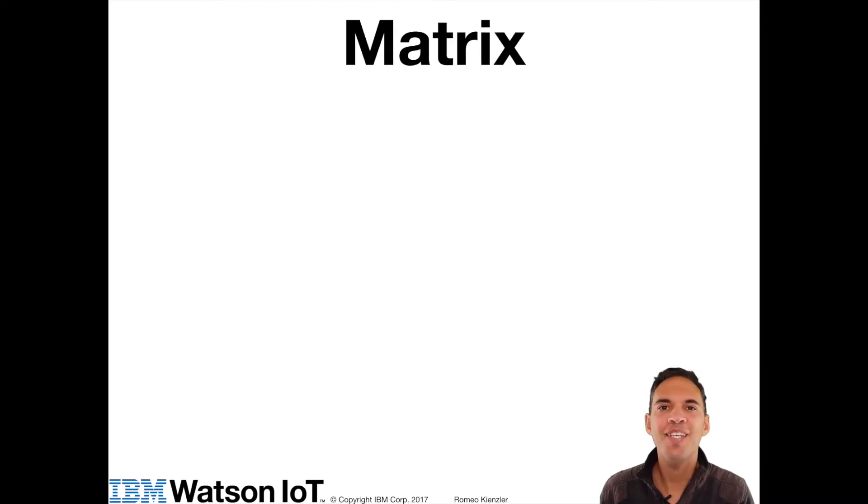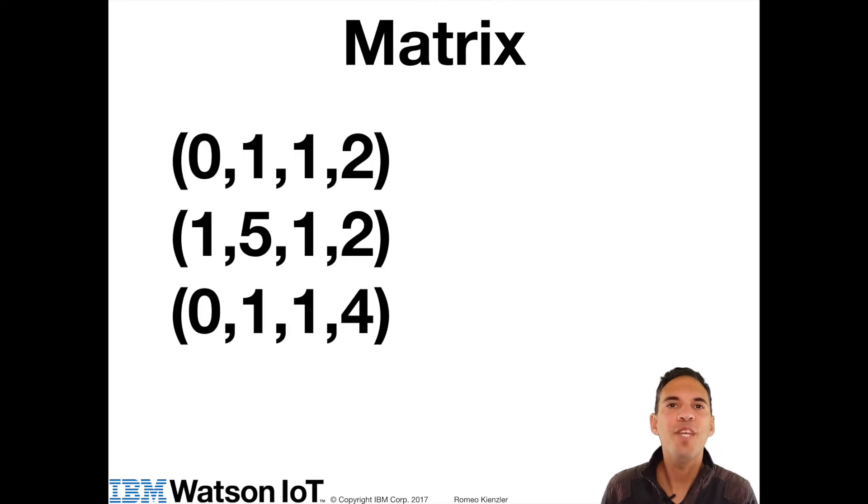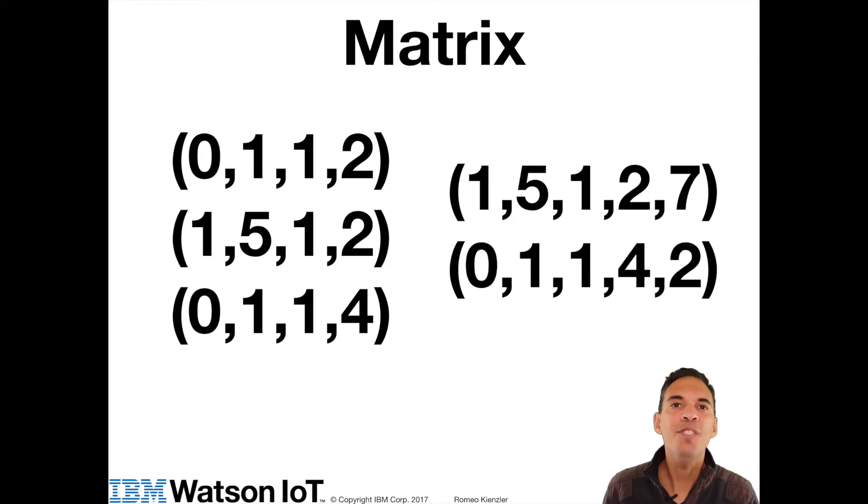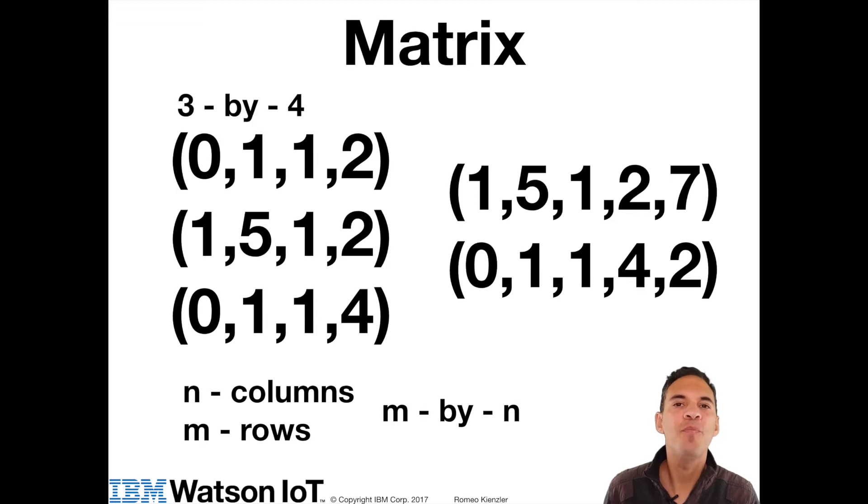A matrix is the big brother of a vector. It is basically a list of equal sized vectors. Notice that the number of rows and columns can be different, but each element has to have the same type. A matrix has n columns and m rows. Therefore, we call these matrices n by m matrices. So the left one is a 3 by 4 matrix, whereas the right one is a 2 by 5 matrix.